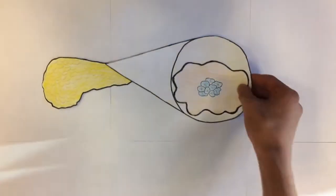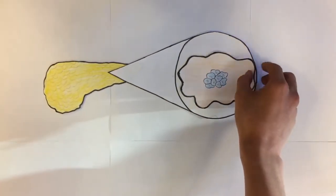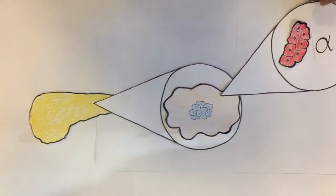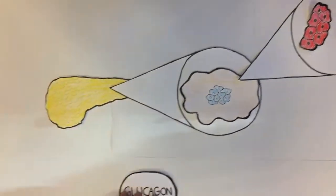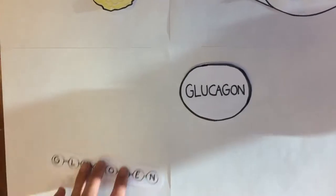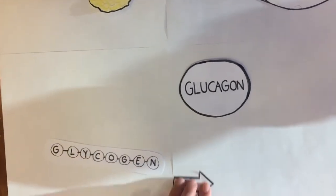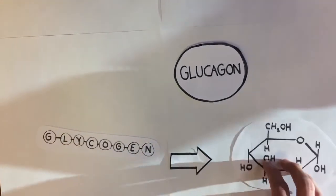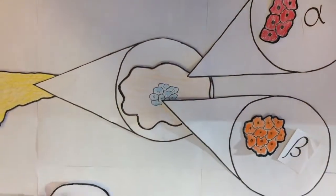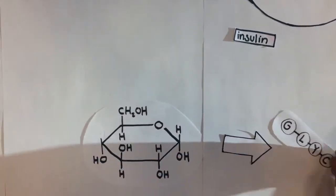In the pancreas, tiny clusters of cells called the islets of Langerhans are composed of alpha cells, which produce glucagon that converts glycogen from the liver into glucose. There are also beta cells, which produce insulin that converts glucose to glycogen.